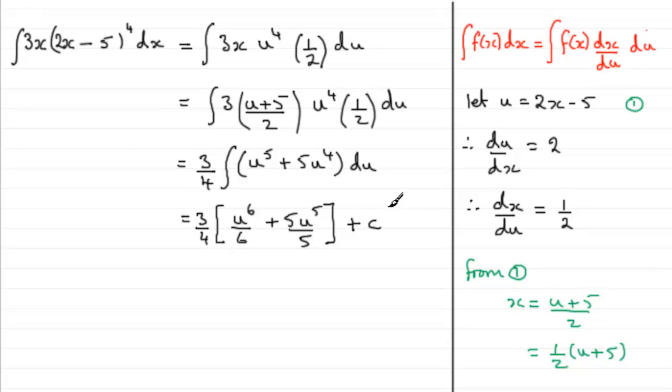Now, we could tidy this up. We can cancel these two 5s here. 5 to 5 goes 1. And we get just u to the power 5. We should really try and tidy this up from here.